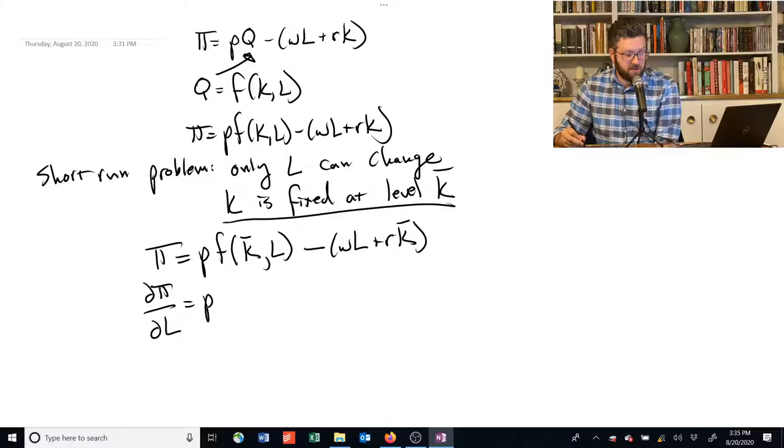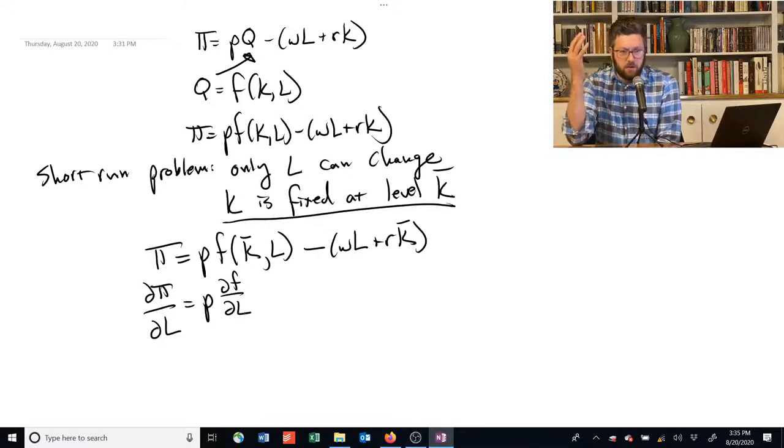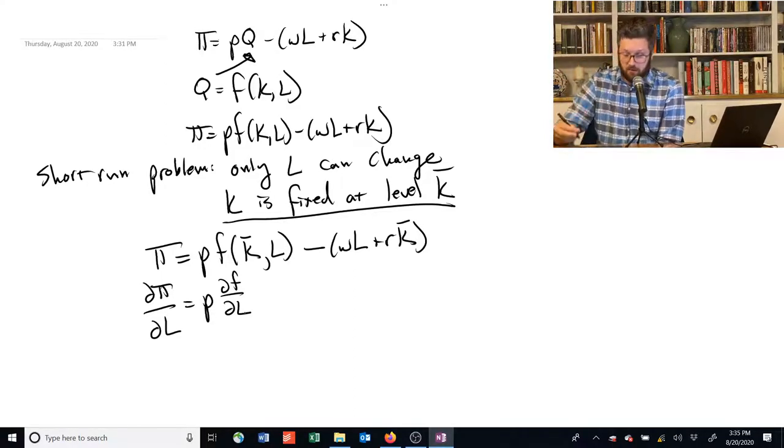P is the price, it's given. We can't affect it. The firm, remember we're assuming, can't choose the price. It's not affected by labor. But the amount he produces is. So we take the derivative of that function with respect to L. We can't go any further than this because we don't know what this function is. We can just write the symbol for the derivative of that production function with respect to L, the partial derivative.